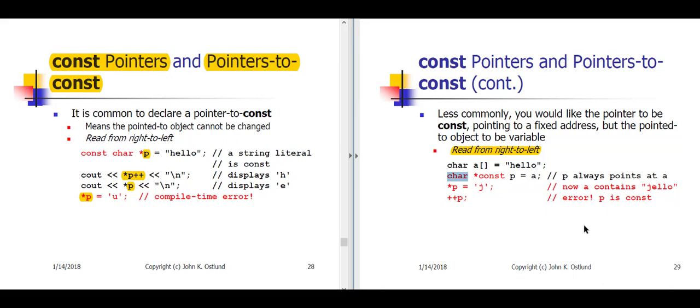Okay, so if we are careful to read that from right to left, this says that P is a const pointer to a char. The char that P is pointing to is not const. P itself is a const. We're initializing P with A. A, in this case, is the name of an array. This is an array of six chars containing H, E, L, L, O, and null. Now, P is going to be pointing at the little h at the beginning of that array, and P cannot be changed.